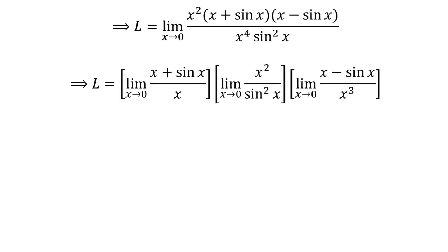We can rewrite the above limit as a product of 3 limits. So L is equal to limit of x plus sin of x upon x times limit of square of x upon square of sin of x times limit of x minus sin of x upon cube of x as x approaches 0.